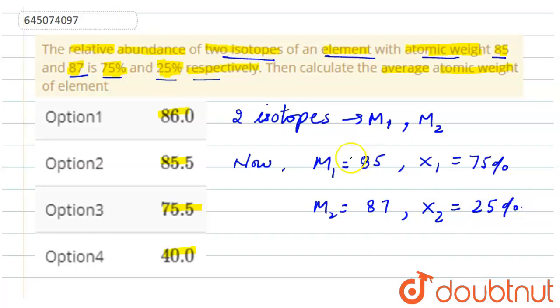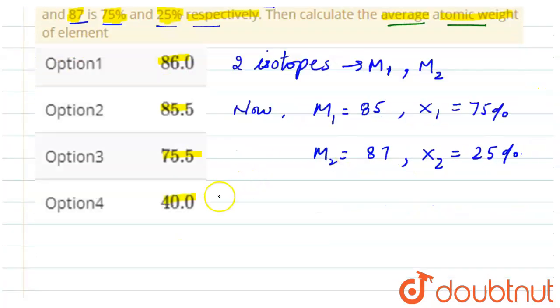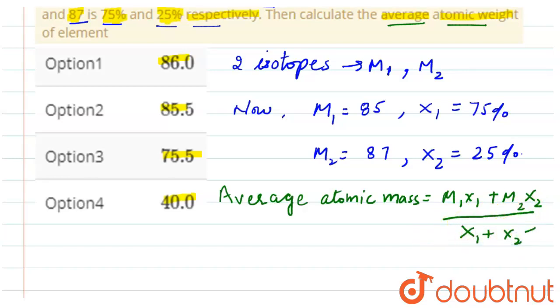So now in the question we need to calculate the average atomic weight. So the formula to calculate the average atomic mass is: average atomic mass is equal to M1 multiply by x1 plus M2 multiply by x2 divided by x1 plus x2.